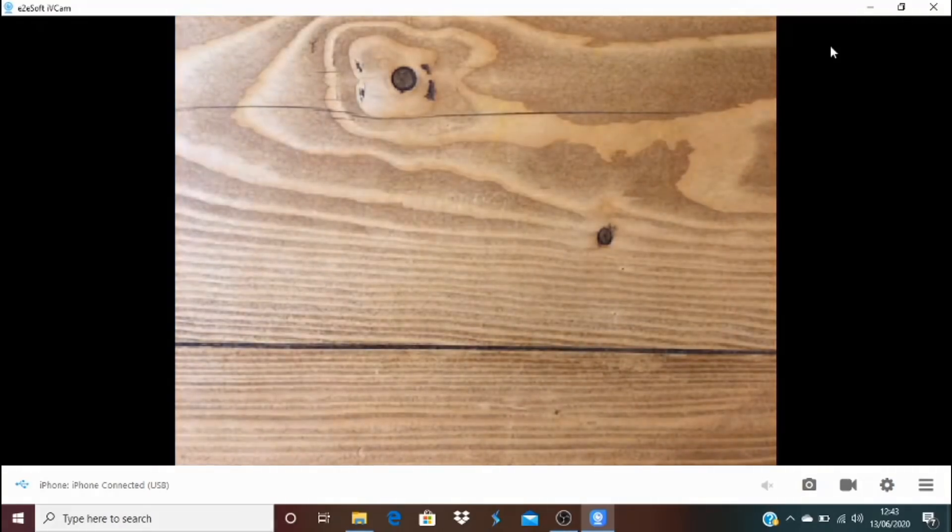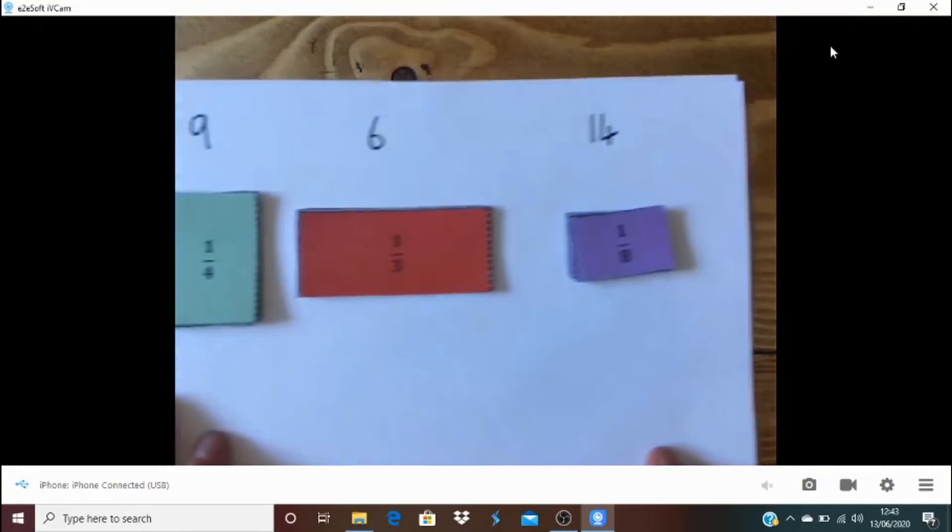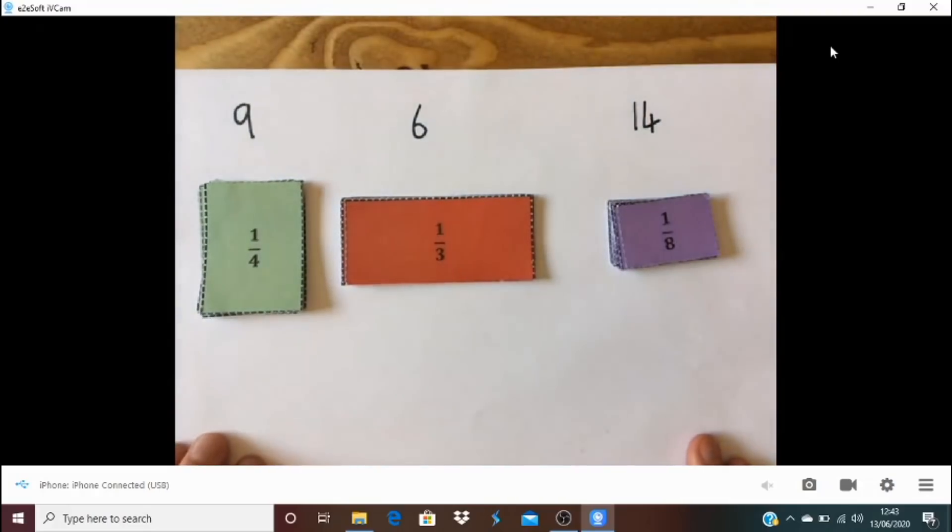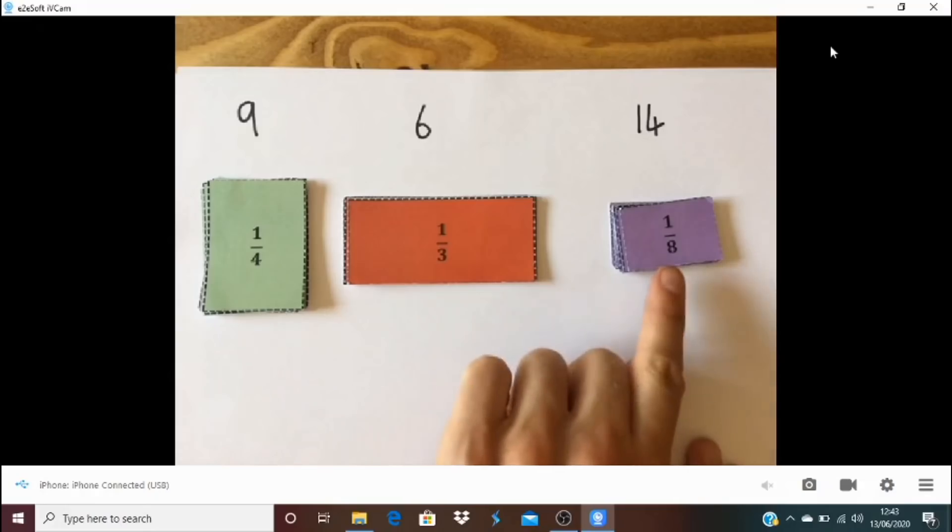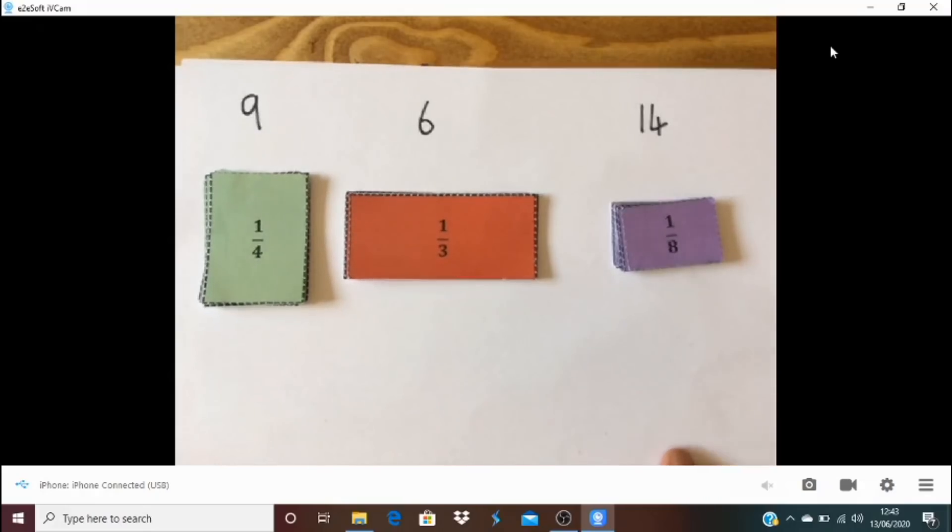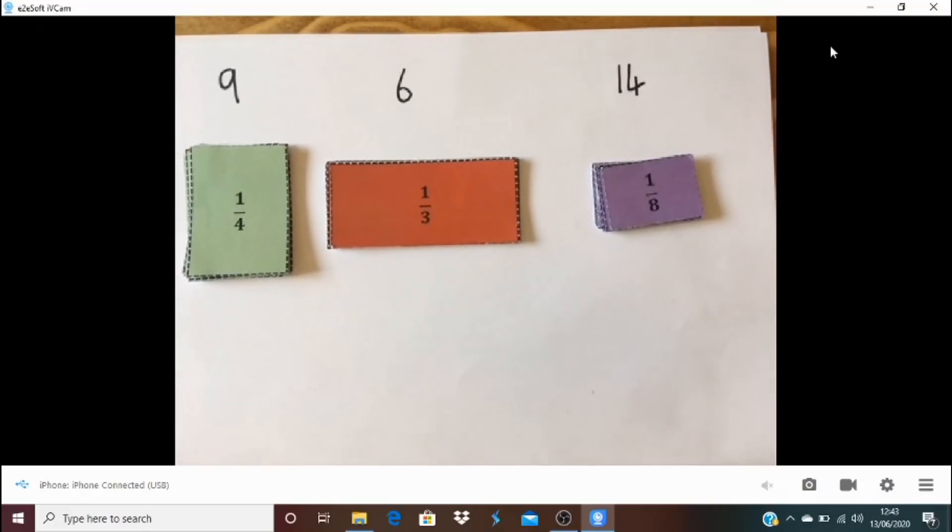Okay, right. Challenge for you. So under here, can you see? I have 9 quarters, 6 thirds and 14 8ths. And what I want you to do is I want you to rank them in terms of which is the most. And if you can, see if you can work out what they are as mixed numbers as well. So have a go and then we'll have a look at them. So have a little pause now.